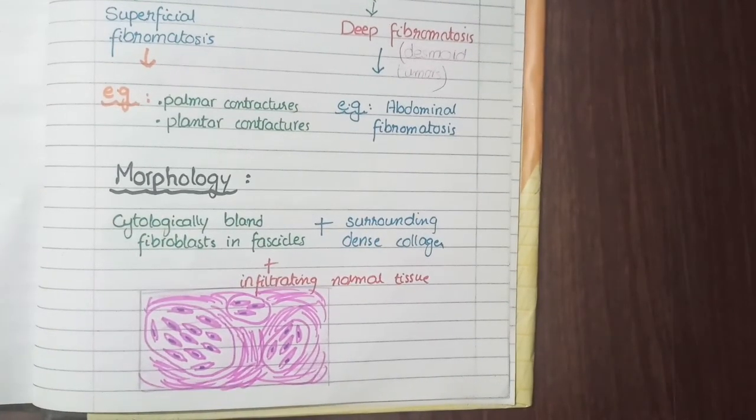Now let's discuss the morphology of fibromatosis. Both superficial and deep fibromatosis have the same morphology and differ only in their location. Morphologically, they consist of cytologically bland fibroblasts arranged in the form of fascicles.